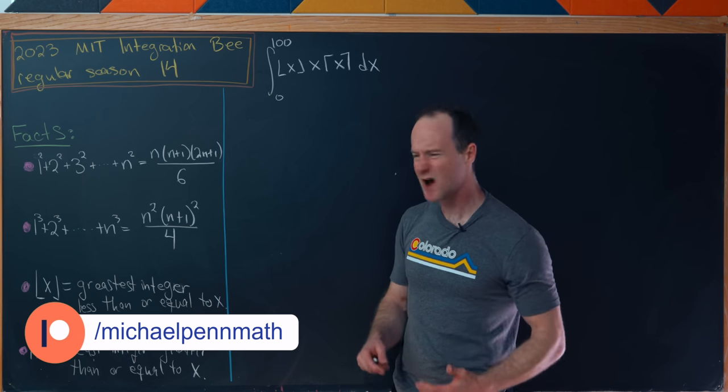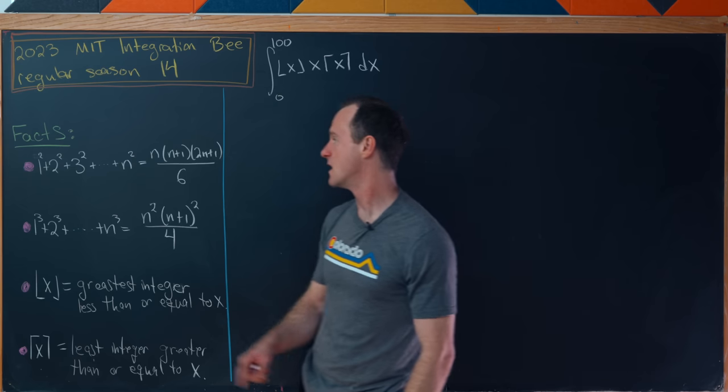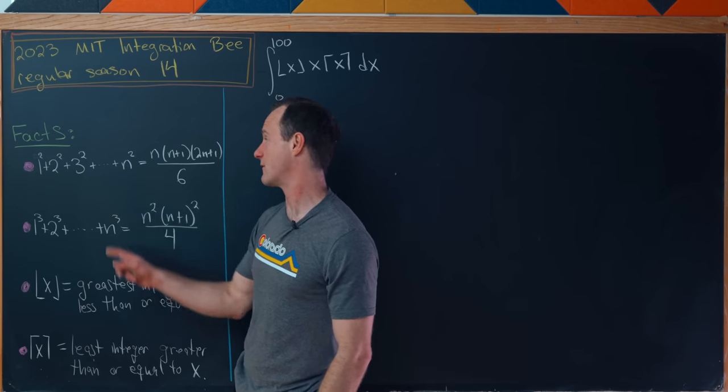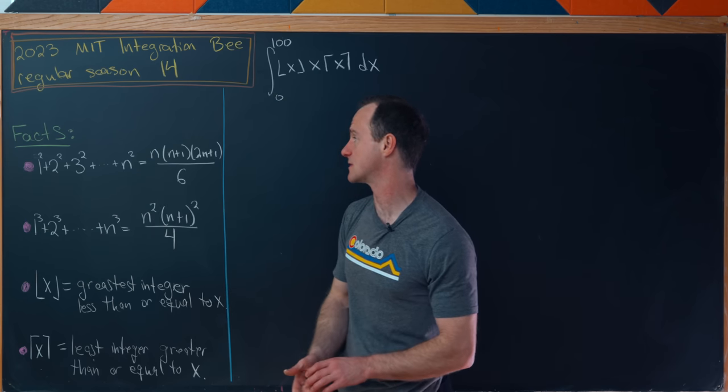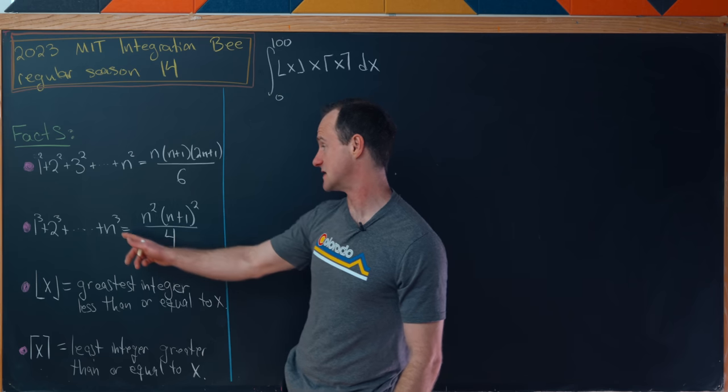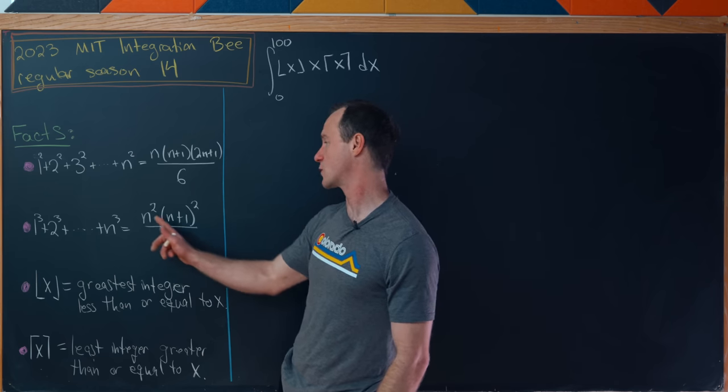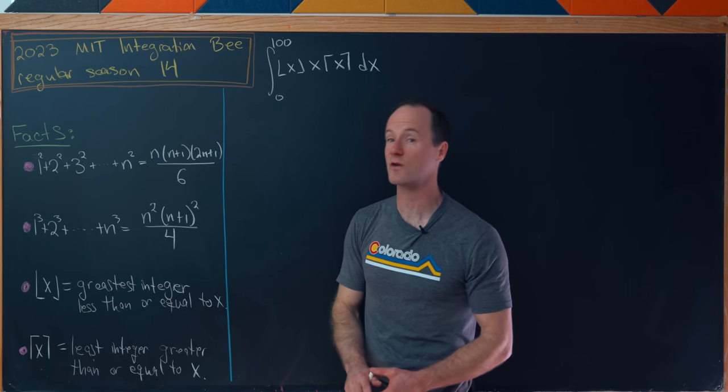We're going to use a couple of well-known tools along our path. The first is the sum of the first n squares equals n times n plus 1 times 2n plus 1 over 6. The next is the sum of the first n cubes is n squared times n plus 1 squared over 4.